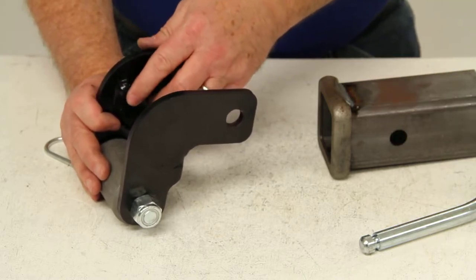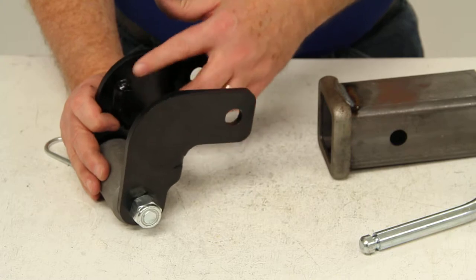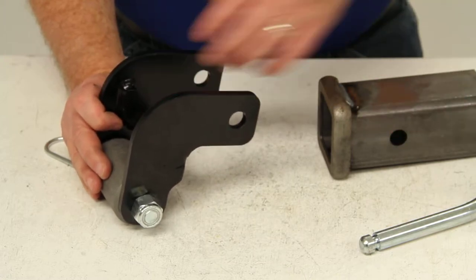Now if that gap is more than 1 eighth of an inch, you would have to weld shims onto this or onto the hitch receiver to make it fit properly.